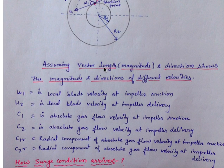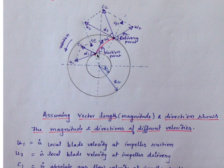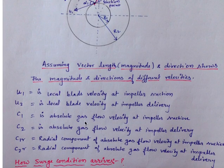The vector length represents its magnitude and direction — the length and direction of each vector shows the velocity of the impeller and the absolute gas velocity at the suction and delivery points. A longer vector means higher velocity magnitude; a shorter vector means lower velocity. At the suction point the vectors are shown smaller because the gas velocity and impeller velocity are lower. At the delivery point, due to centrifugal action, velocity increases, so those vectors are shown bigger.